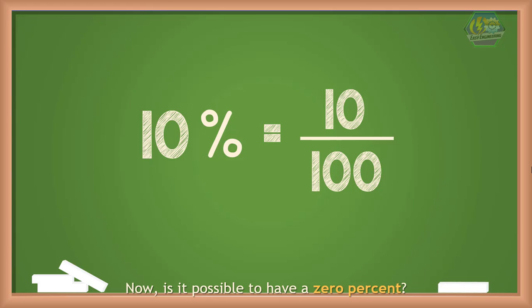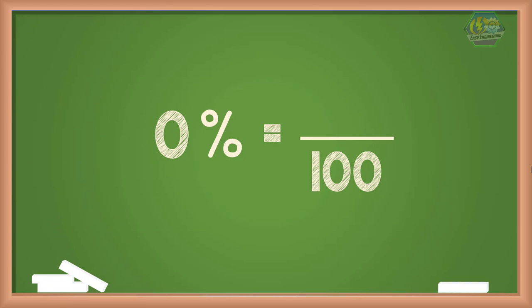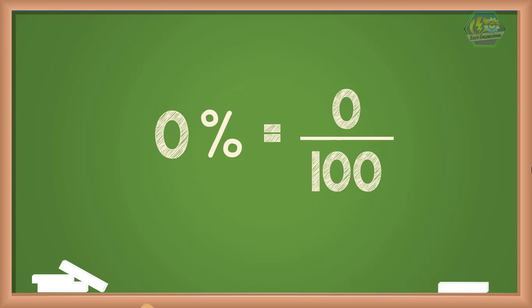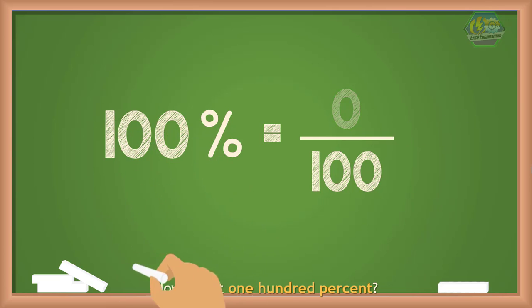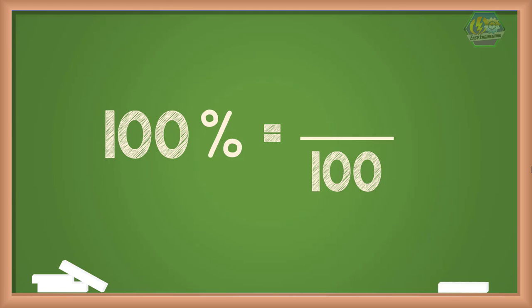Is it possible to have 0 percent? Yes — 0 percent would just mean 0 over 100, meaning its value is just 0. How about 100 percent? Well, 100 percent means 100 over 100. As you can see, the numerator and denominator are the same, therefore this is a whole fraction and the fraction value is 1.